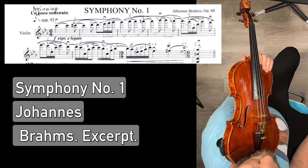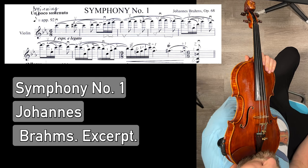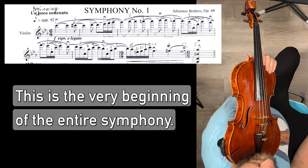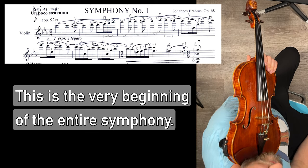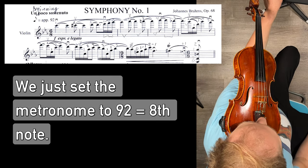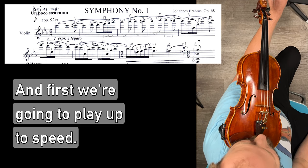We're first going to play through the first two lines of Symphony No. 1, Johannes Brahms' excerpt. This is the very beginning of the entire symphony. We're going to set a metronome to 92, and first we're going to play through up to speed.